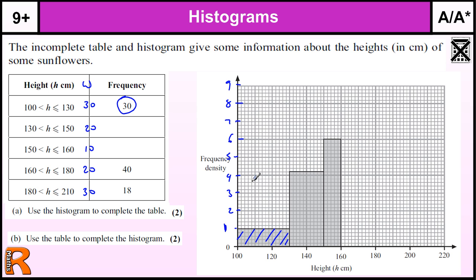That allows us to use the histogram to complete the table, because this bar here is, as we know, 20 wide, and it's 4 and 1 square high, so 4.2 high. So that's 4.2 high times by 20, so 4.2 times by 20. Two 4.2s are 8.4 with a 0, times by 10 is 84.